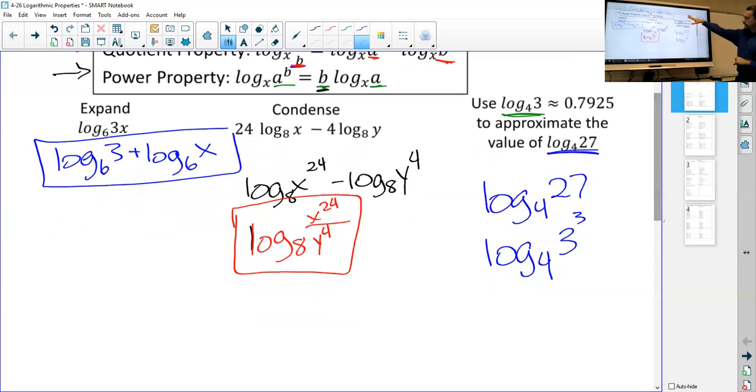And then if I use my power property, I know I can take this exponent, this power of three, and I can bring it to the front of my logarithm. So say three times the log base four of three. This is a four, not a one. Let's make that clear. So this is condensed as best we can, but now I know, I know what log base four of three is, approximately 0.7925.